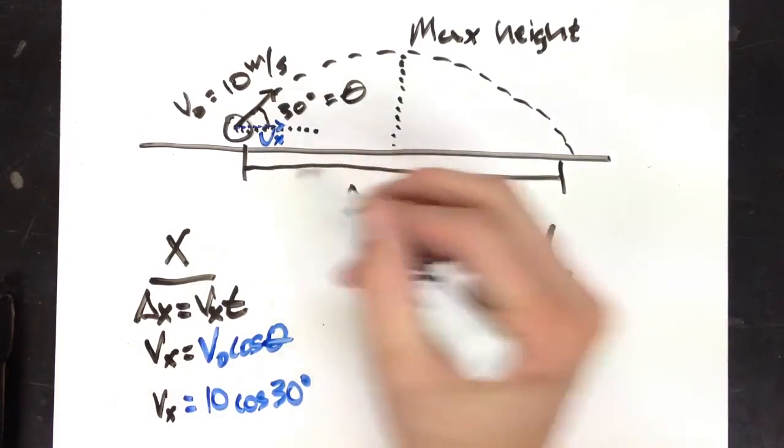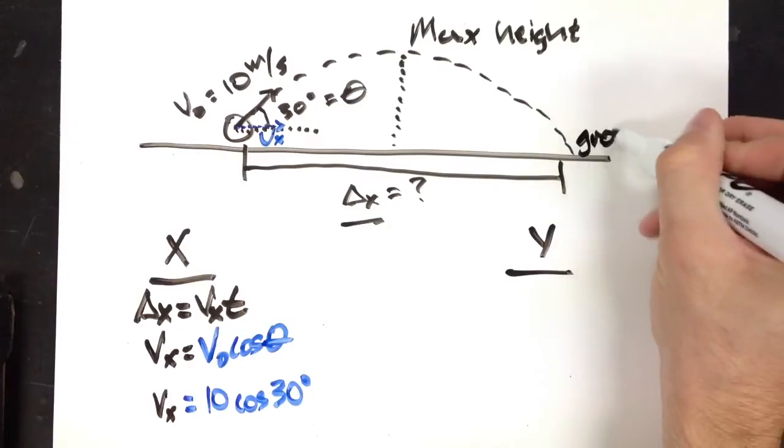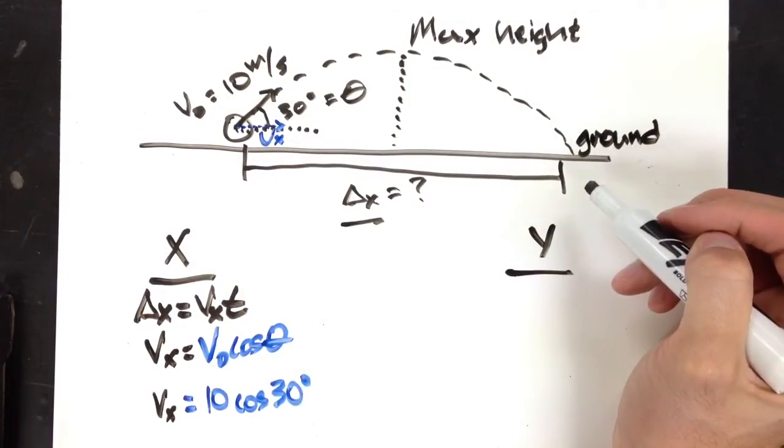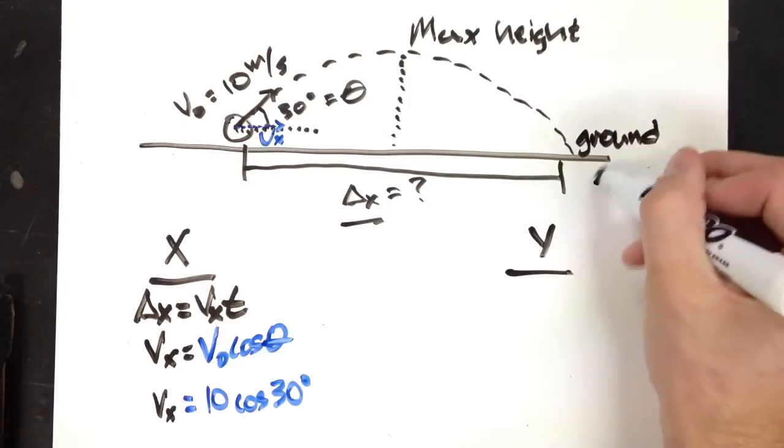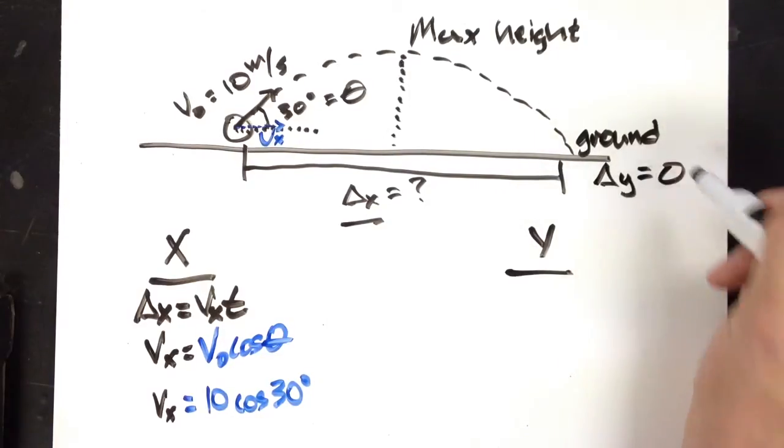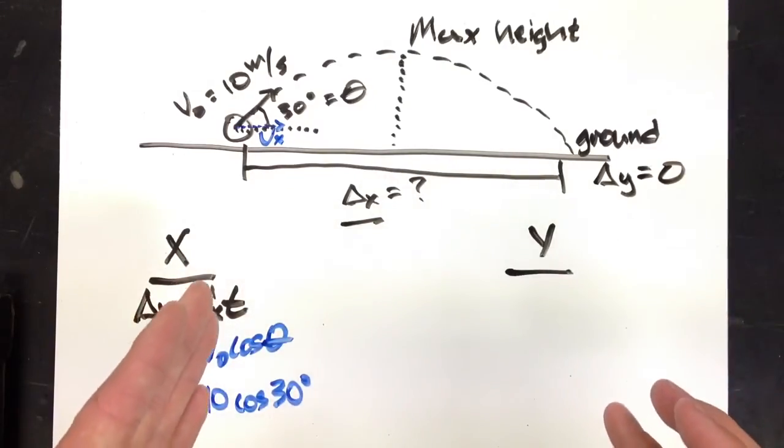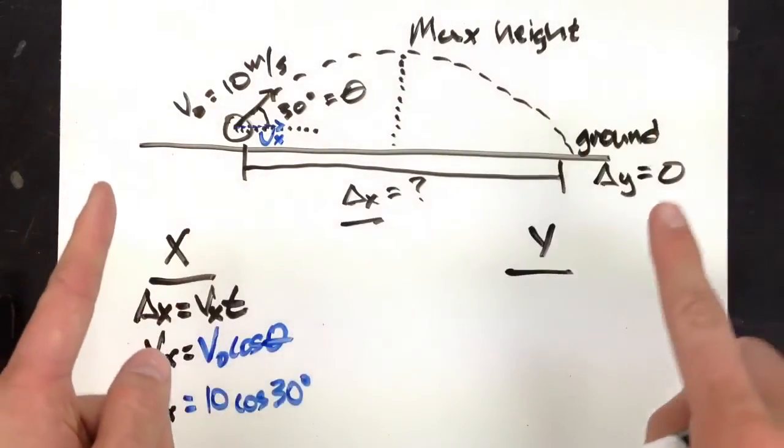Now, if a projectile is fired from the ground and lands back on the ground, then its delta y overall is 0. There's no change in my height. I start on the ground and I end on the ground.